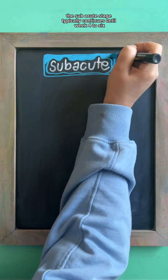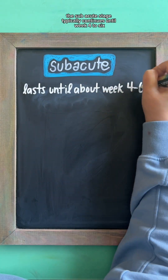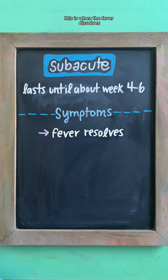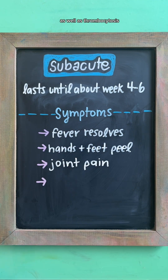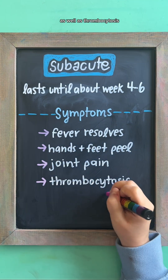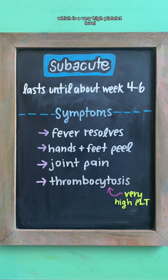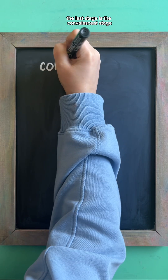The subacute stage typically continues until week four to six. This is when the fever resolves, the hands and feet begin to peel, and there may be joint pain as well as thrombocytosis, which is a very high platelet level, which puts the patient at a high risk of aneurysm and sudden death.